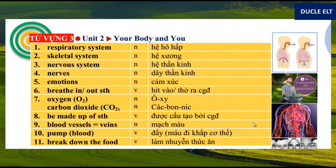Vocabulary 3. 1. Respiratory system. 2. Skeletal system. 3. Nervous system. 4. Nervous system. 5. Emotions. 6. Breathing. Breathe out something. 7. Oxygen. Carbon dioxide. 8. Be made up of something. 9. Blood vessels. 10. Pump blood. 11. Break down the food.